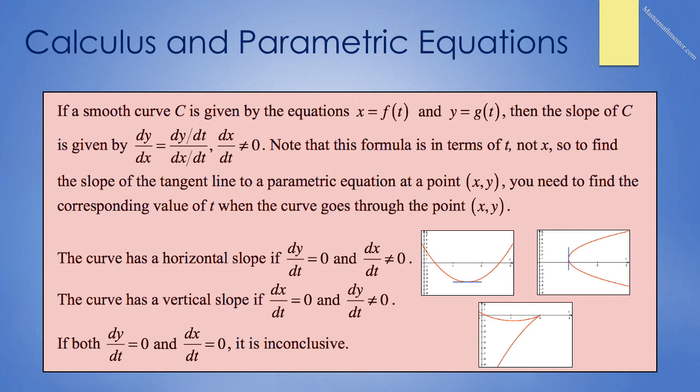Suppose we have a smooth curve C given by the parametric equations x equals f of t and y equals g of t. Then the slope of C is given by dy/dx equals dy/dt over dx/dt, if dx/dt is not zero. This formula is in terms of t, not x.